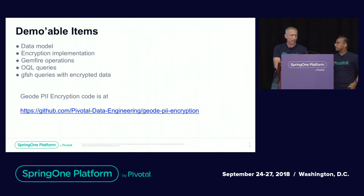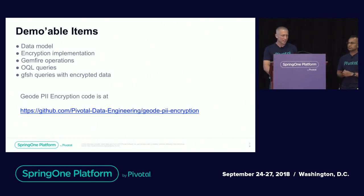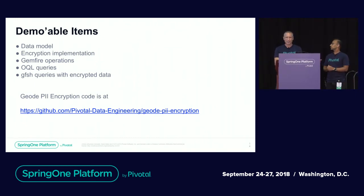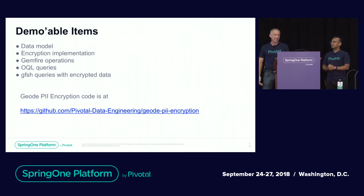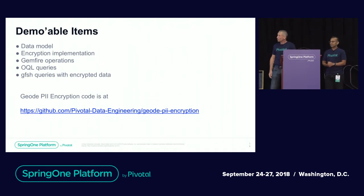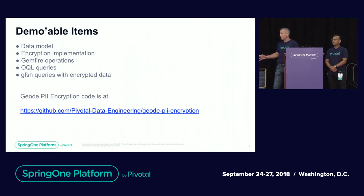This is all available on our Pivotal Data Engineering GitHub site. That concludes our prepared slides and demo code walkthrough. We'll leave time for Q&A. If we have extra time, I'll mention some follow-up work — we've written a soon-to-be-published blog on how to migrate existing data from unencrypted to encrypted with this pattern, achieving that with zero downtime.